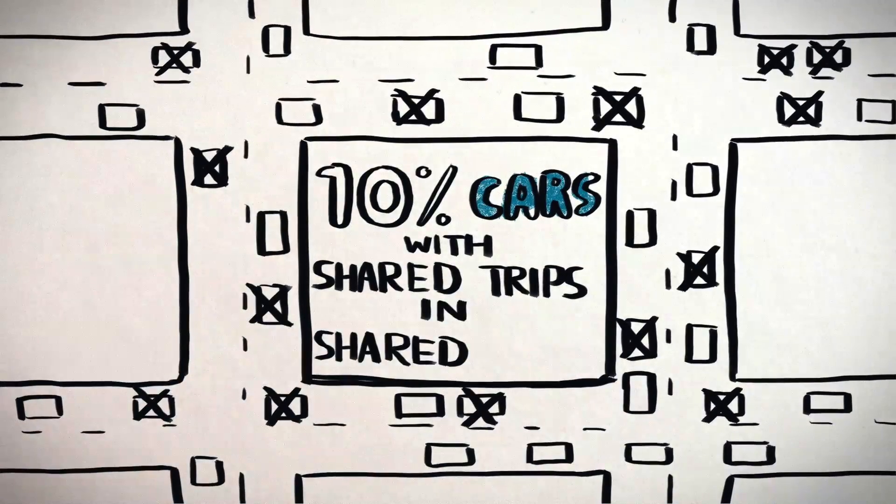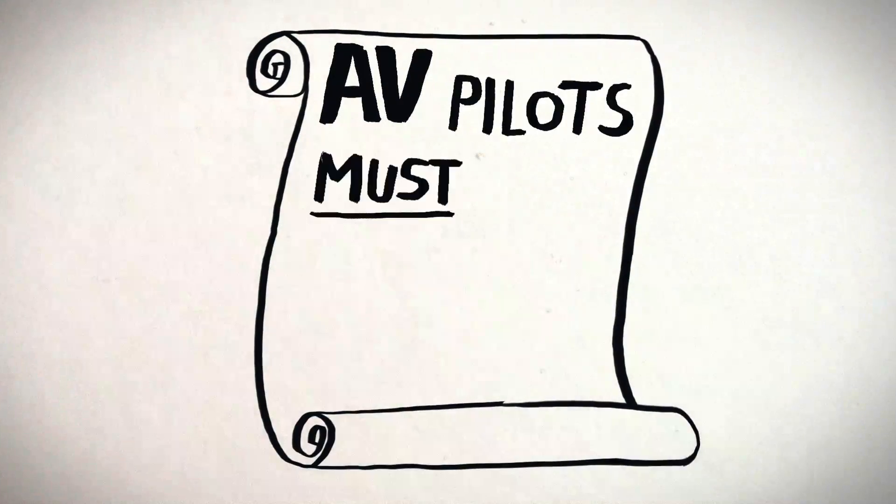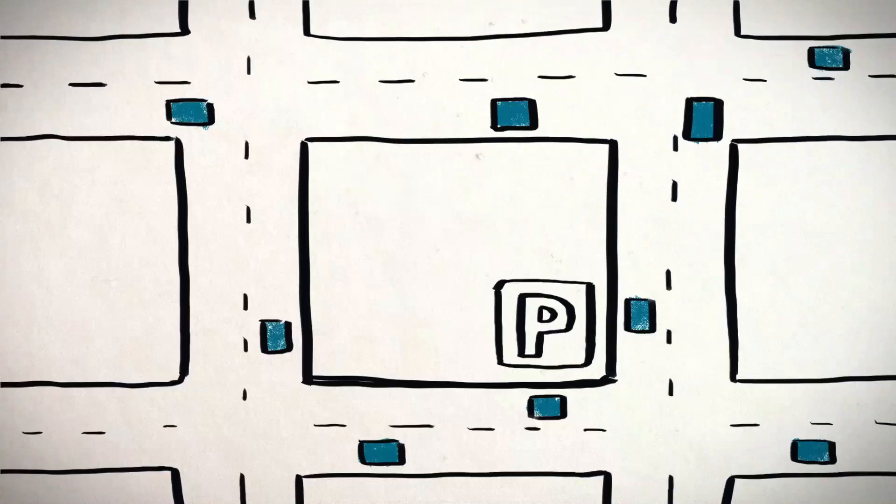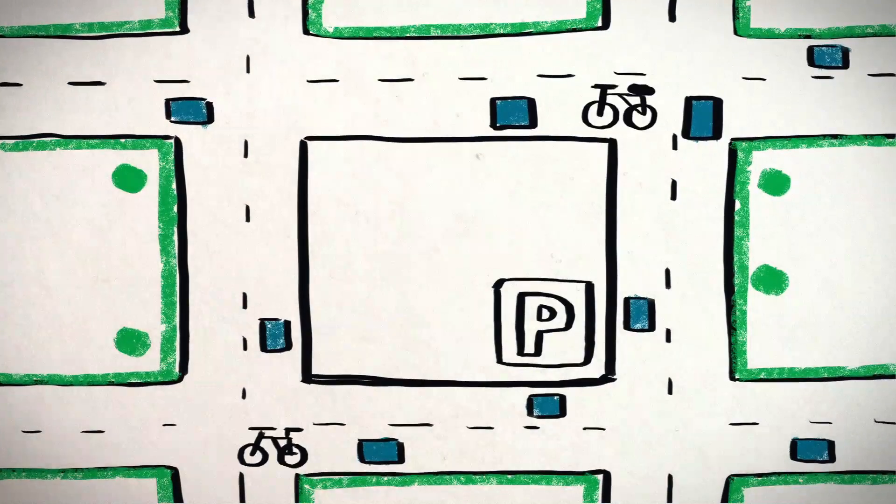No more on-street parking. No more parking garages. If most of the AVs in cities are shared cars in which people can share trips, we can widen sidewalks, plant trees, put in bike lanes and benches.